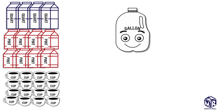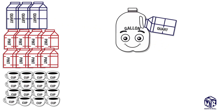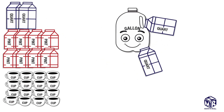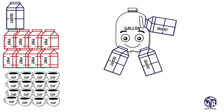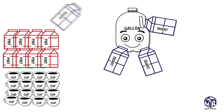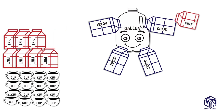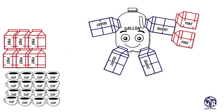One gallon has 4 quarts, so we attach 4 quarts. Each quart consists of 2 pints, so we add 2 pints to each quart.